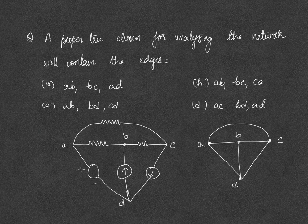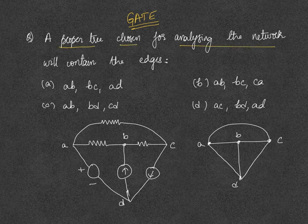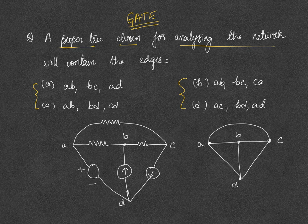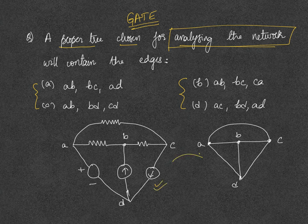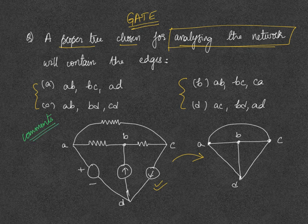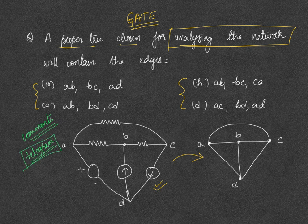Now that we have discussed some basics of graph theory, we will end this lecture with a past year GATE question. The question is: a proper tree chosen for analyzing the network will contain which edges? The network and its corresponding graph are given, and the answer will be posted in the comments section. For a detailed solution, you can follow the link to the Telegram group in the comments and description.